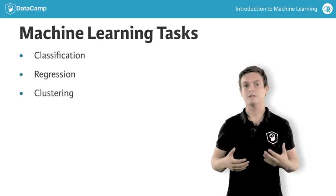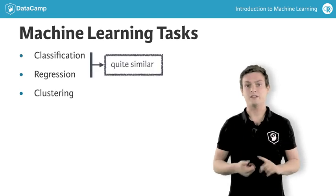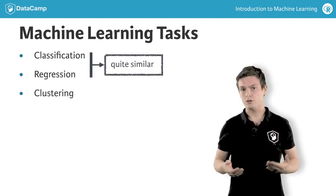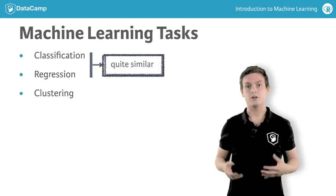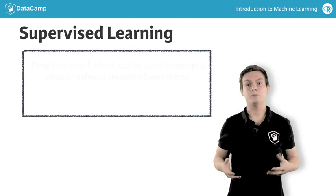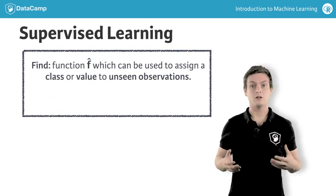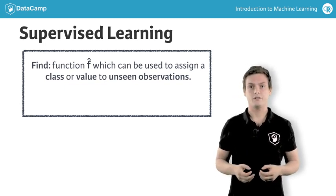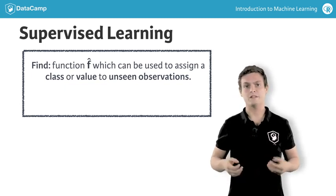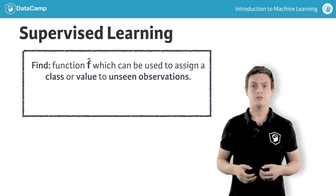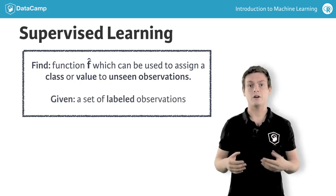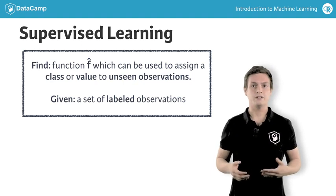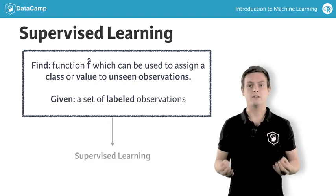As you might have felt, there are quite some similarities between classification and regression. For both, you try to find a function or a model which can later be used to predict labels or values for unseen observations. It is important that during the training of the function, labeled observations are available to the algorithm. We call these techniques supervised learning.